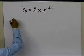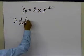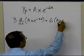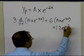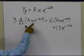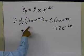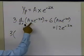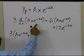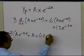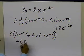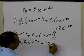I'll plug yp = a·x·e^(−2x) back into the differential equation: 3·(d/dx)(a·x·e^(−2x)) + 6·(a·x·e^(−2x)) = 12e^(−2x). Taking the derivative using the product rule gives 3·[a·e^(−2x) + a·x·(−2e^(−2x))] + 6·a·x·e^(−2x) = 12e^(−2x).